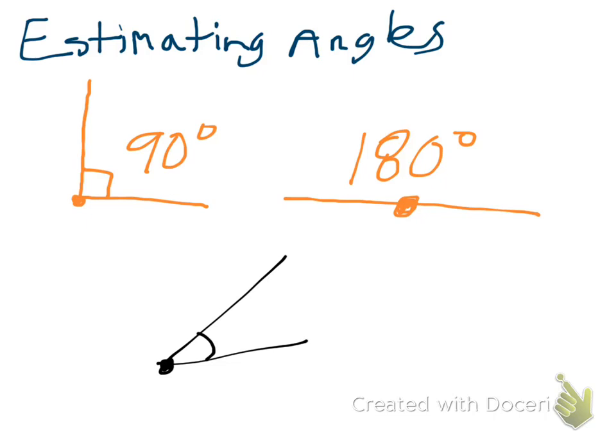And then what I have to ask myself is, how much less than 90 is it going to be? Is it about half of 90 degrees? Is it less than half of 90 degrees? And I'm estimating, and to me, that looks like just a little bit less than half of 90 degrees. So if I were to cut 90 degrees in half, that would be 45 degrees. And I said it looks a little bit less, so I'm going to make an estimation that that's about 40 degrees.